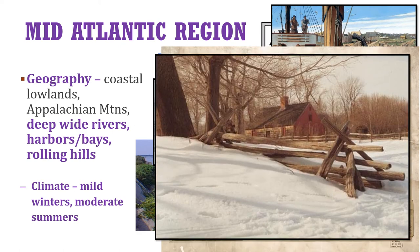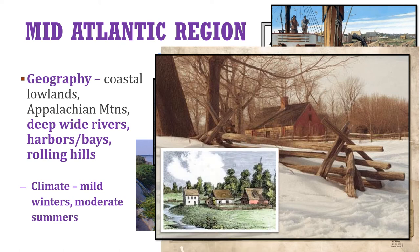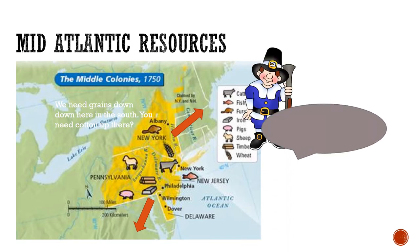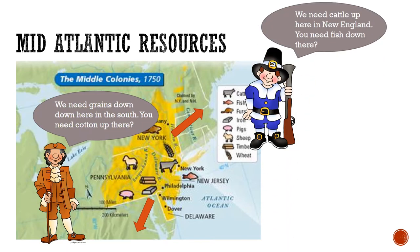The climate in the Mid-Atlantic region is overall mild, with mild winters and moderate summers. The Mid-Atlantic colonies featured many resources not only for the people living in this region, but also to trade and send north to the New England colonies and south to the southern colonies. In this way, the other colonies were interdependent with one another, trading goods grown or made in their region with other regions so that everyone could benefit.